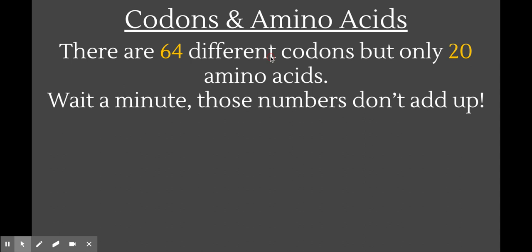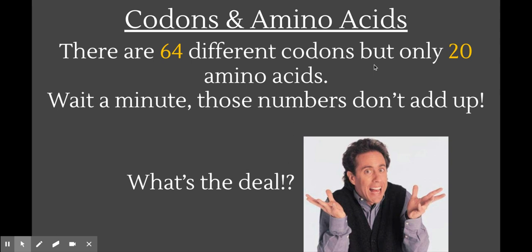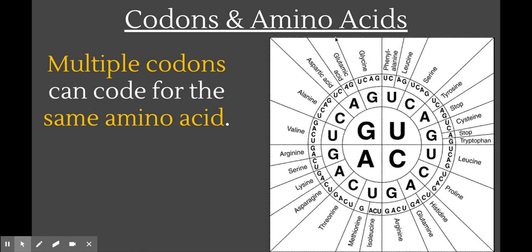If codons are three nucleotides long and there are four different nucleotides, there are actually 64 different possible codons. You might think there are 64 different amino acids, but there are not — there are only 20 amino acids. Looking at the translation wheel, you can see that there are multiple codons for many of the amino acids. For example, alanine: the codons GCU, GCC, GCA, and GCG all code for alanine. For most amino acids, there are multiple codons that code for that amino acid, which means all 64 codons do code for an amino acid, but there are only 20 amino acids.